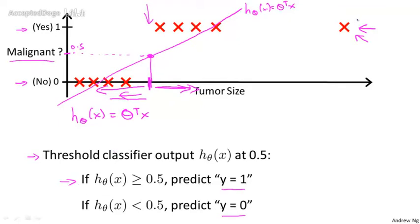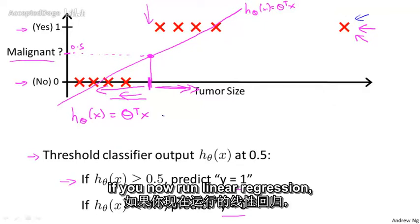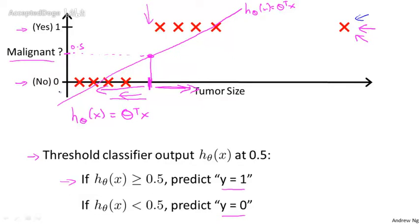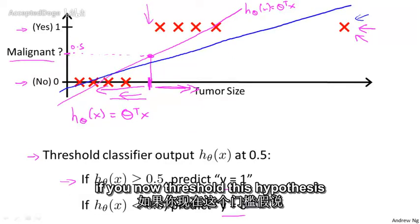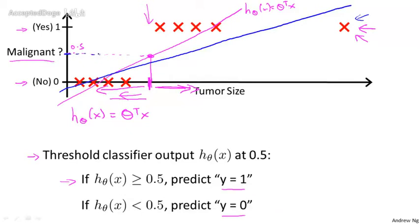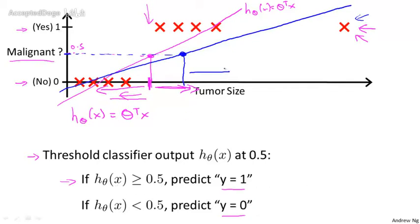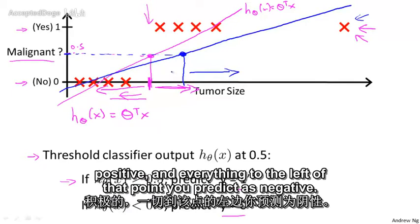But once we've added that extra example out here, if you now run linear regression, you instead get a straight line fit to the data that might maybe look like this. And if you now threshold this hypothesis at 0.5, you end up with a threshold that's around here, so that everything to the right of this point you predict as positive and everything to the left of that point you predict as negative.